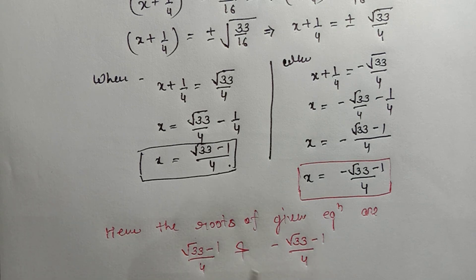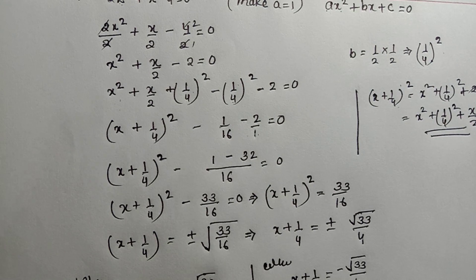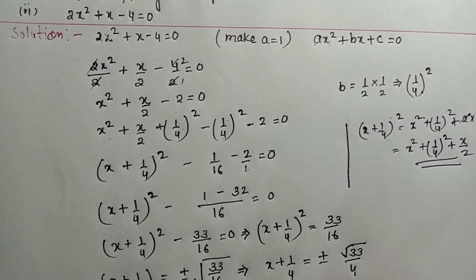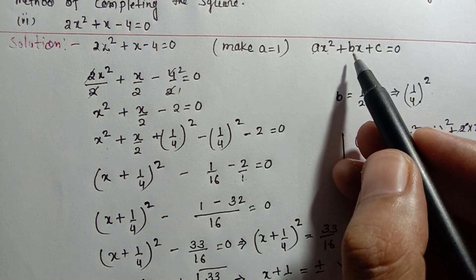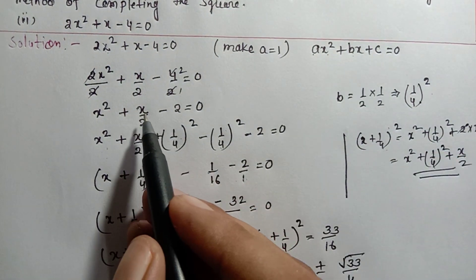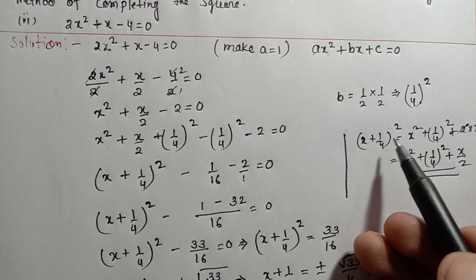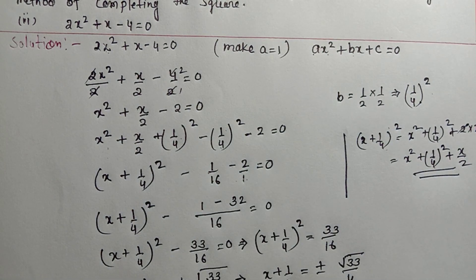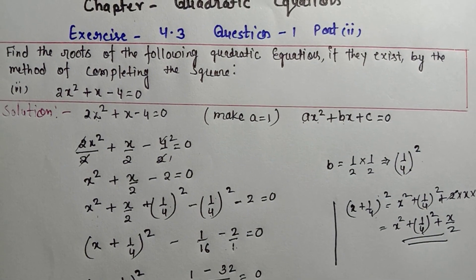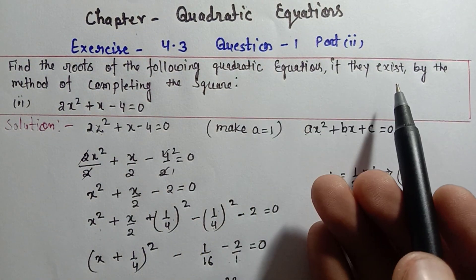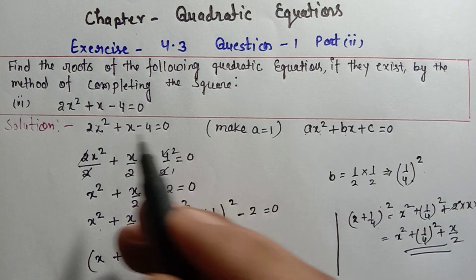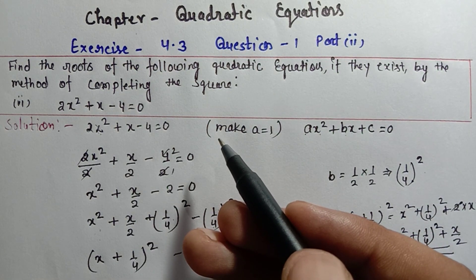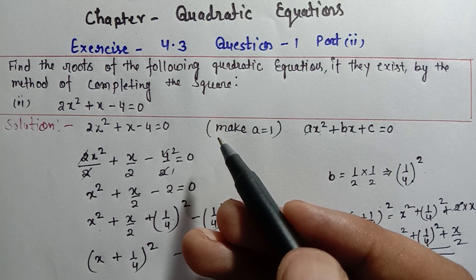Hence the roots of the given equation are (√33 - 1)/4 and (-√33 - 1)/4. The completing the square method has just three steps: first, make the coefficient of x² equal to 1; second, take half of b, square it, and add and subtract it; third, simplify and solve. I hope you understood Exercise 4.3 Question 1 Part 2 clearly. If you have any doubts, ask in the comment box. Please like this video and subscribe to my channel. Thank you.